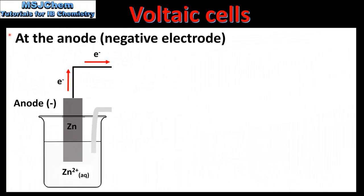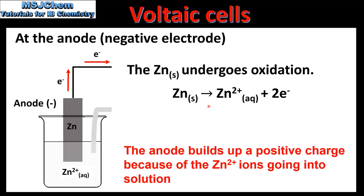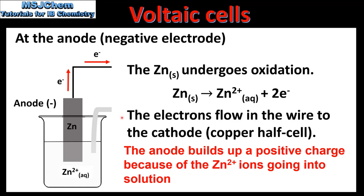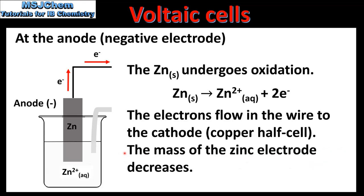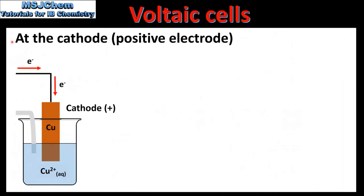Next we'll have a closer look at the reactions occurring at the anode and cathode. At the anode the zinc metal undergoes oxidation. Here we can see the half equation: the zinc metal undergoes oxidation to form aqueous zinc ions. This causes a build up of positive charge at the anode. The electrons then flow in the wire to the cathode, and the mass of the zinc electrode decreases because the zinc metal is undergoing oxidation.